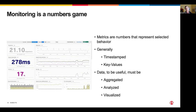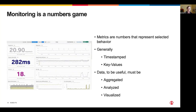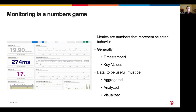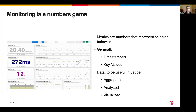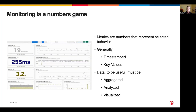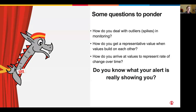What you're looking at here is a sped-up chart of rate, error, duration — the information a trace can tell us about what's going on inside our application. So we have all these numbers. Let's think about a couple of questions: How do you deal with outliers or spikes — and remember, spikes can go down as well as up? How do you build a statistically valid representative value when values build upon each other? And how do you represent rate of change over time? The real question is: do you know what your alert is telling you?